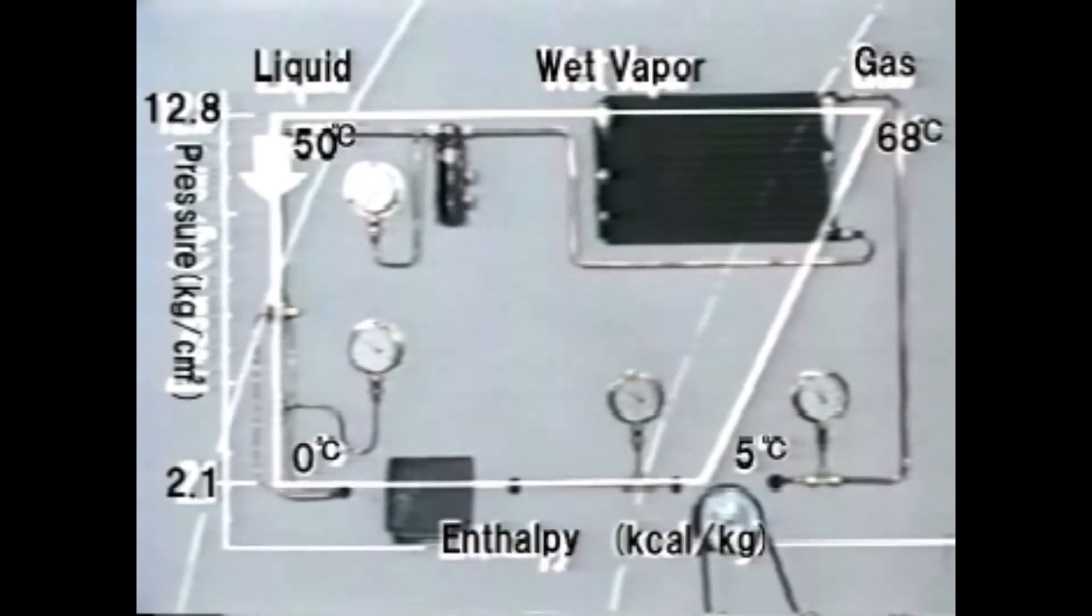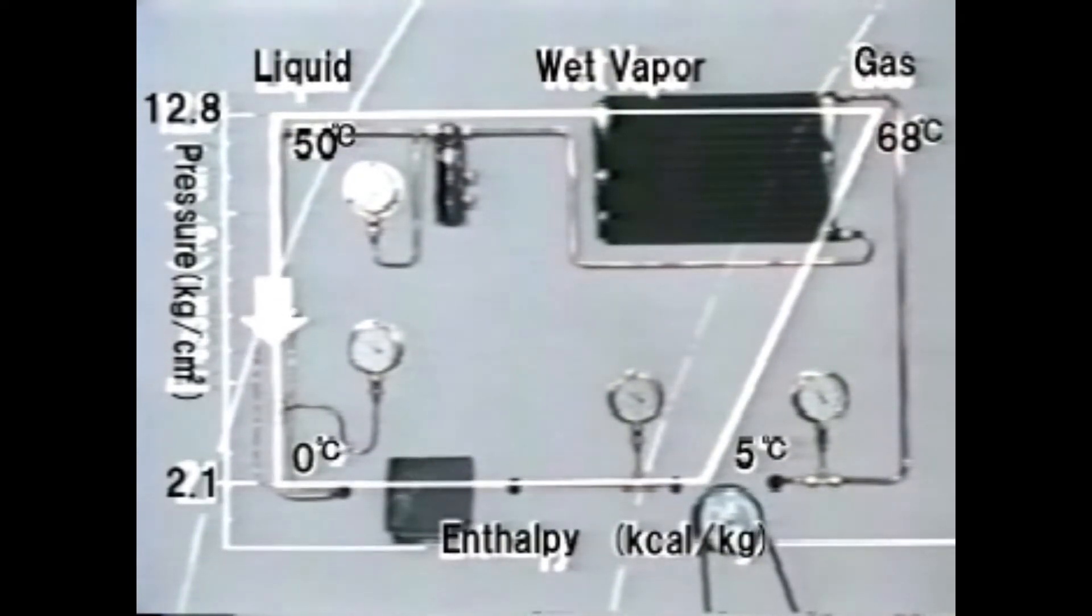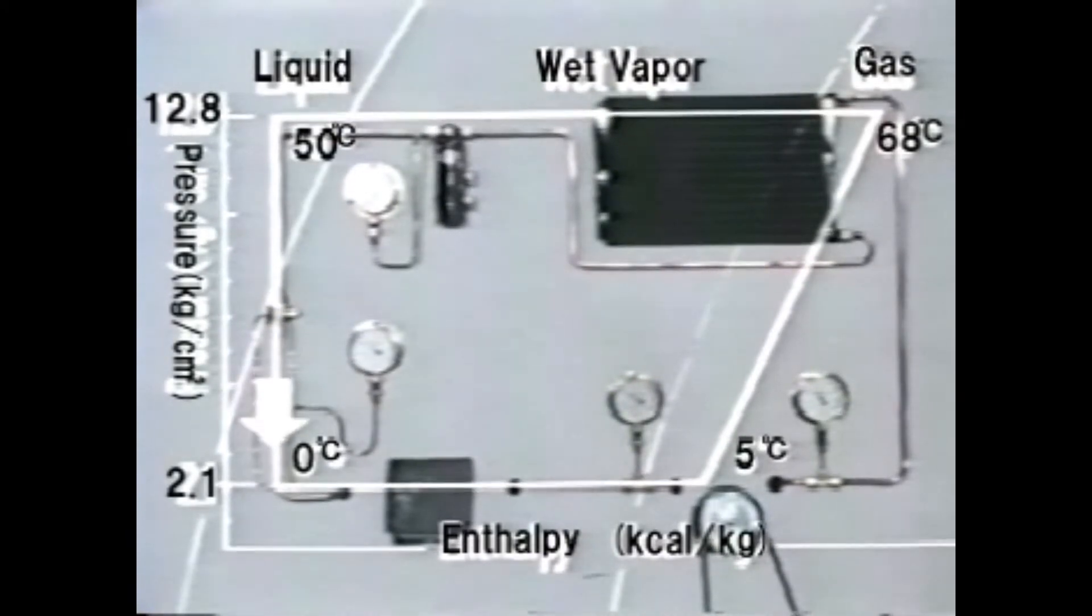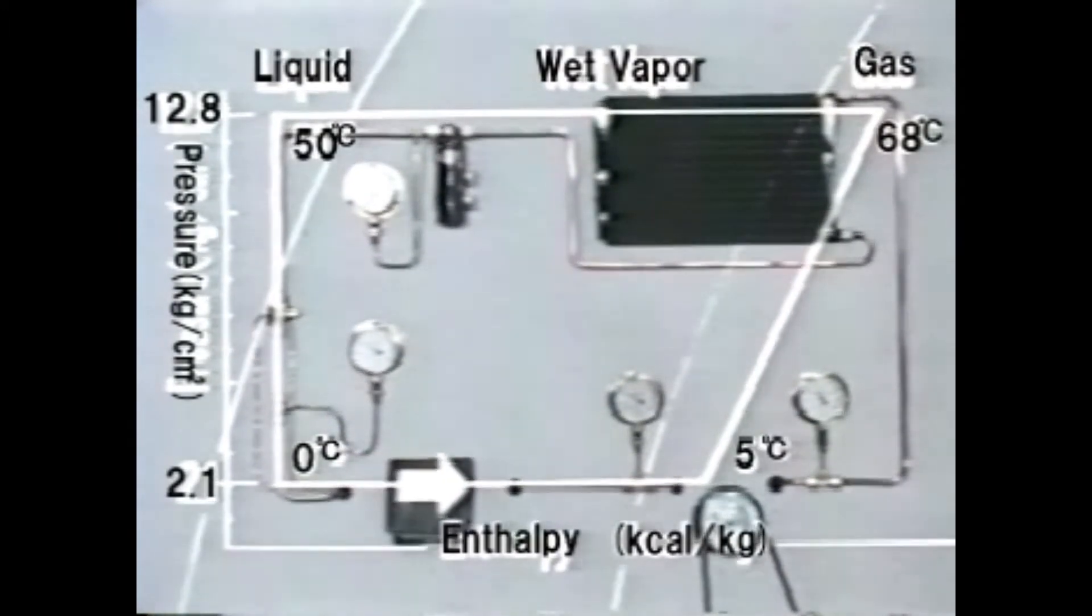In other words, refrigerant at pressure 12.8 kilograms per square centimeter and 50 degrees centigrade is decompressed to pressure 2.1 kilograms per square centimeter by the expansion valve to turn into vapor at zero degrees centigrade.